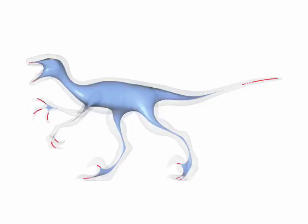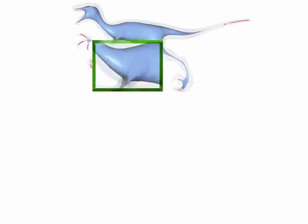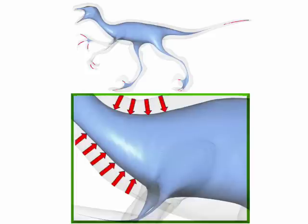We formulate the geometry contraction process as an energy minimization problem involving contraction and attraction constraints. The contraction constraints are based on the discrete Laplace operator, which provides forces to remove the geometry details along the approximate normal directions.